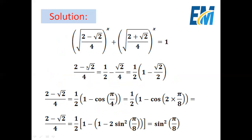Now we have to simplify these two terms. Let's begin with (2 minus square root of 2) over 4. It can be written as 2 over 4, which is one half, minus square root of 2 over 4. Then we can take 1 over 2 as a common factor. So (2 minus square root of 2) over 4 equals one half times (1 minus square root of 2 over 2).